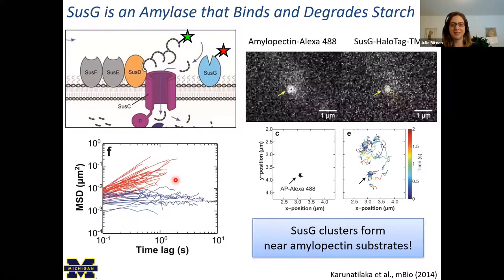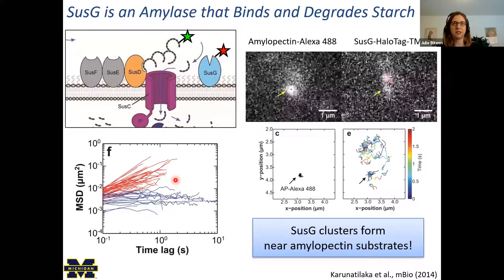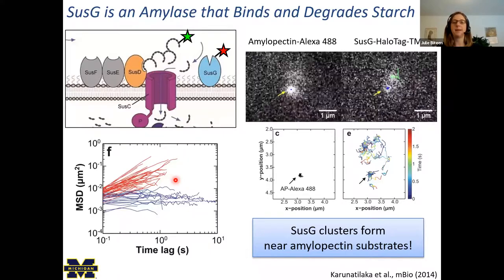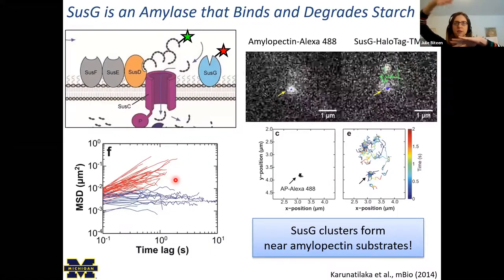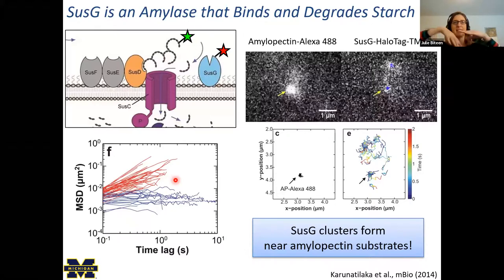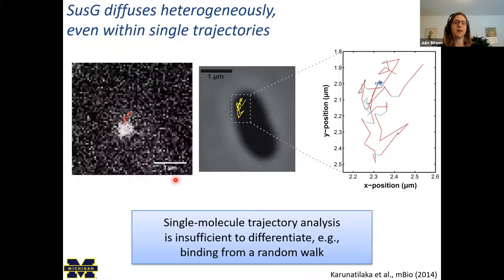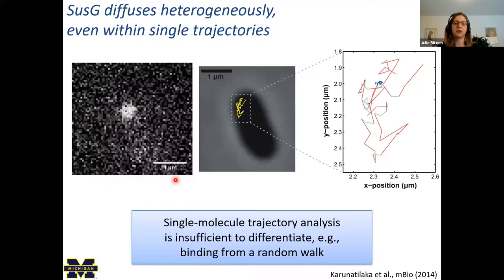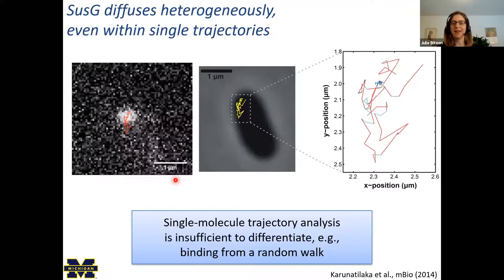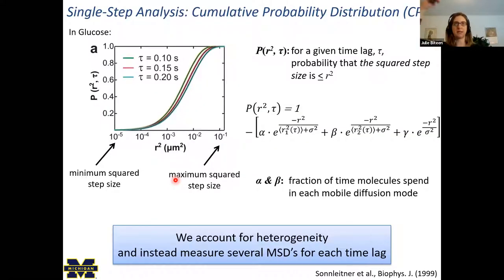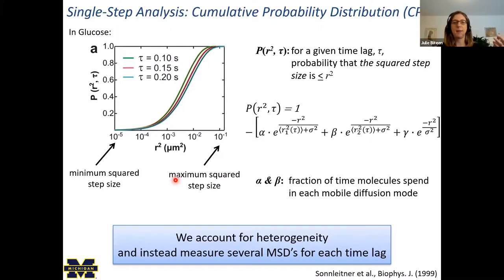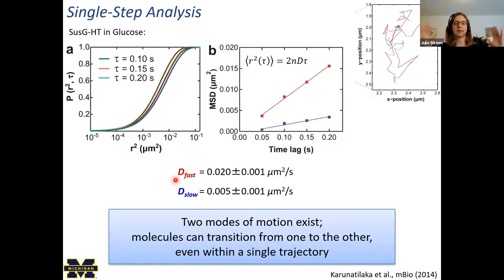We've thought a lot about how to understand this sort of data. One challenge we have is a molecule that moves pretty quickly and then binds its target — in that case, the average diffusion coefficient of the whole trajectory is not what we're looking for. We see heterogeneous motion even within single trajectories. So what we want to analyze is what's the difference between binding and a random walk. We think a lot about not just single track measurements, but also single step measurements using cumulative probability distributions of the step sizes. We can fit our step size distributions to get diffusion coefficients, and if we have a long trajectory, capture the fact that there's some slow and some fast motion even within a single trajectory.